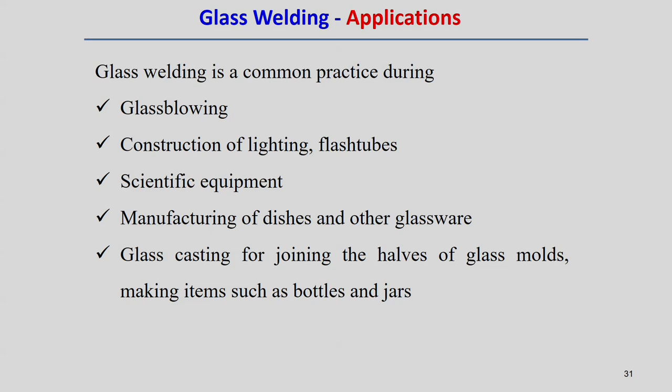Glass welding is a common practice during the glass blowing process, construction of lighting and flash tubes. Scientific equipment also uses glass welding applications. Manufacturing of dishes and other glassware, glass casting for joining the halves of glass molds, and making items such as bottles and jars are applications where the glass casting process is followed to get the desired shape. These are the typical applications of the glass welding process.